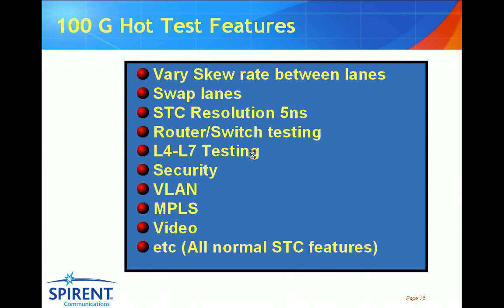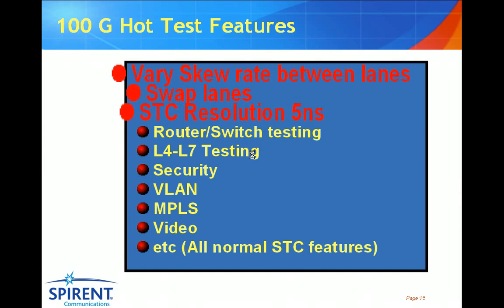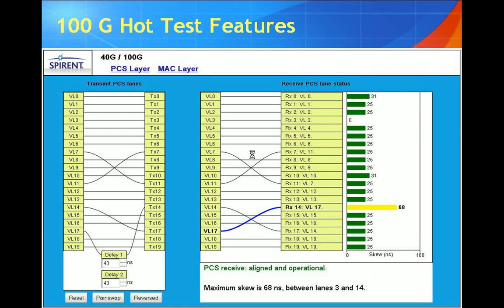Testing in 100 gig today is focusing on skew rates and lane swapping. With Spirent's capability to provide resolutions down to five nanoseconds, not only does it make these tests possible, it also makes the results very accurate. With this technology, we'll also be able to support router and switch testing, layer four through seven testing for application testing, security testing, VLAN, MPLS, video, etc. All the normal Spirent capabilities and features will be supported on the new 100 gig platform on the Spirent Test Center. Many of our customers are focusing on the basics: lane swapping and introduction of skew. Here in this example diagram, we can swap lanes — here we're swapping lanes 17 and 14 and introducing an additional 43 nanoseconds of skew. On the right, you can see how the lanes have been swapped and how the additional skew has taken that particular lane to an additional skew of 43 nanoseconds.